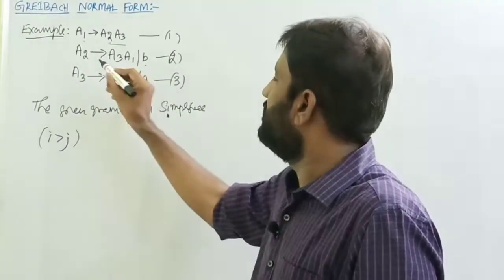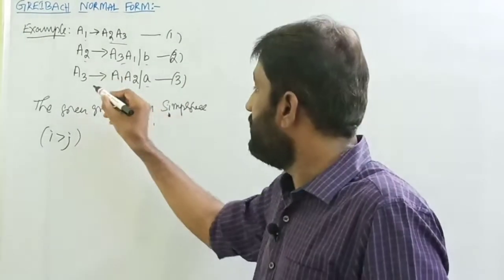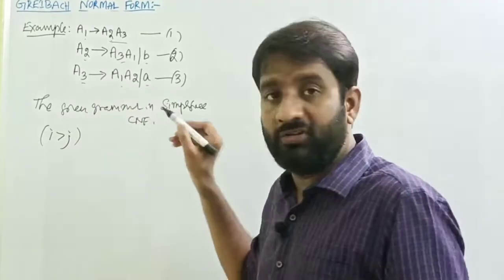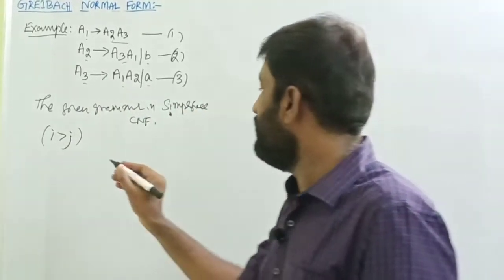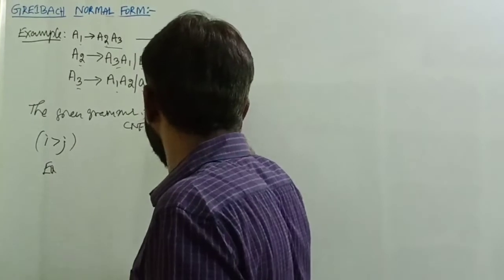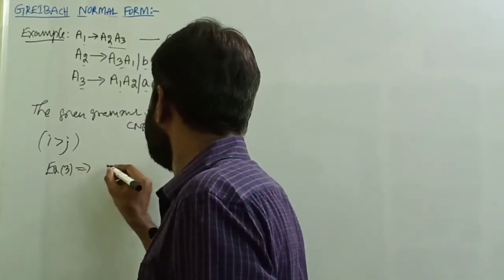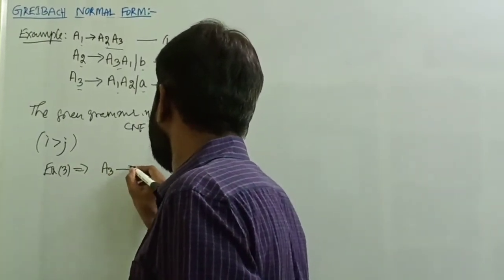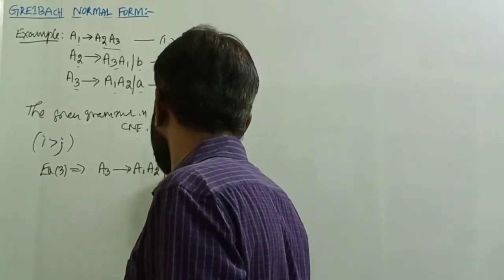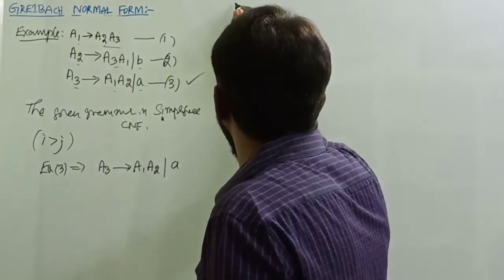Now for equation 3, we have 3 greater than 1, so we can take equation 3. Equation 3 is: A3 tends to A1 A2 | a.